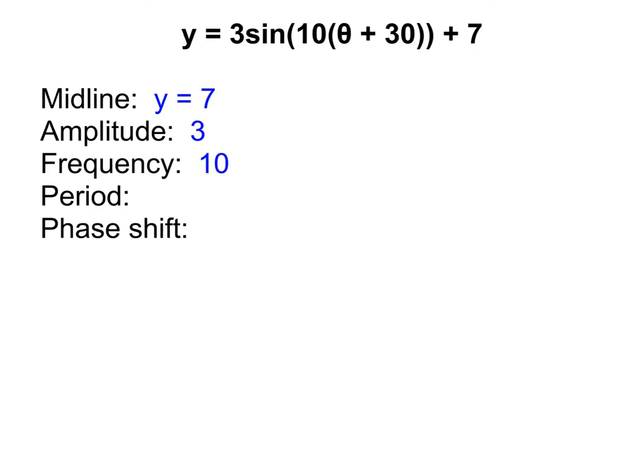Now, we need to find the period. In order to find the period, we've got to do a little bit of calculation. To find the period, remember, we are going to do 360 divided by that B value. The B value we now know is called the frequency. So, I'm going to do 360 divided by 10. When I do 360 divided by 10, that gives me 36 degrees. So that's my period.